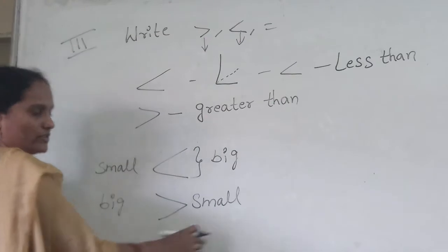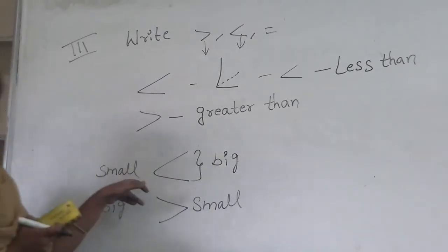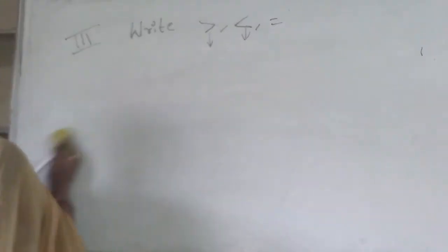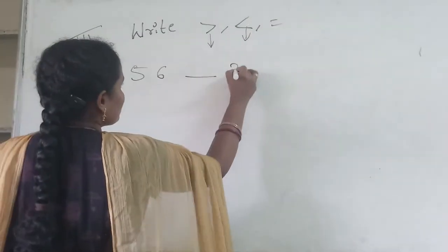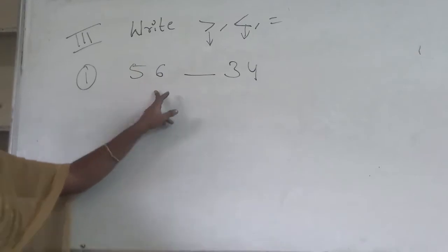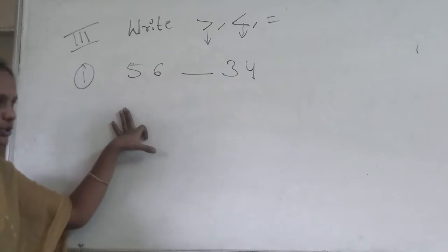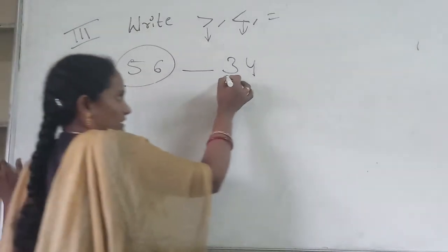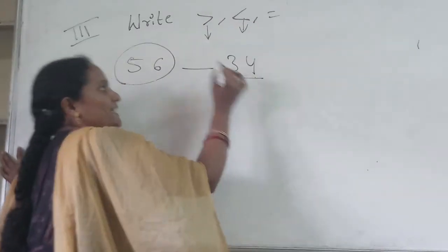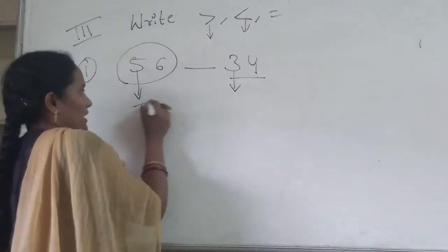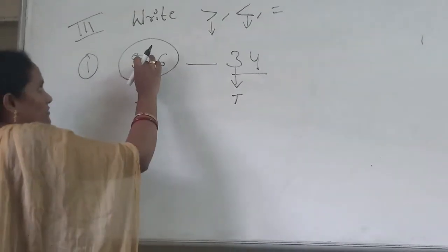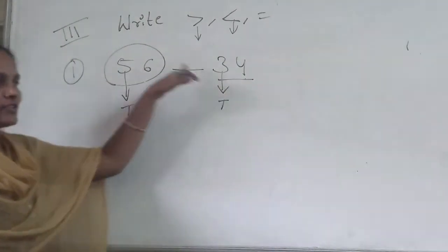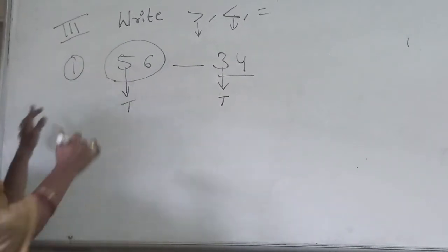Big numbers and small numbers — whatever you are using, you can apply this idea. Now let's see some examples: 56 and 34. Which one is the big number? First check how many digits each number has. Both take two digits: ones and tens. So we check the tens place. In the first number the tens digit is 5; in the second number it is 3. 5 is always the bigger number, so 56 is the big number.